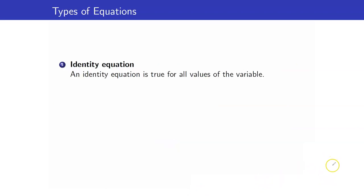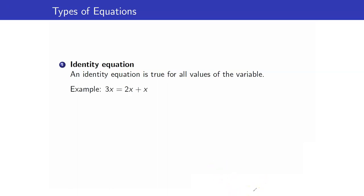We have two kinds of equations. The first one is an identity equation — an identity equation is true for all values of the variable. Whatever value you plug in for x, the equation would still be true. For example, 3x equals 2x plus x is an identity equation. Whatever value you put for x, this will always be true.